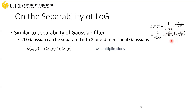The idea is: if you have to apply a 2D Gaussian to filter an image, you usually have a two-dimensional filter, but what you can do instead is first filter in the x direction and then filter in the y direction, and the result is not going to change.